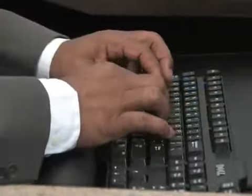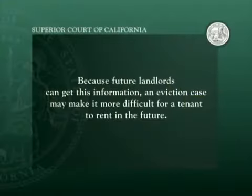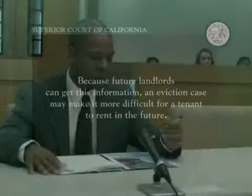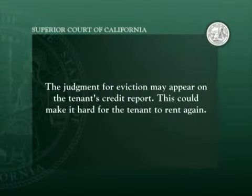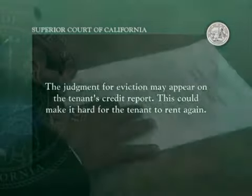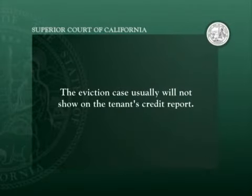An eviction case becomes public record 60 days after the case is filed. This means that someone could do a search of public records, find the eviction case, and see what happened on it. Because future landlords can get this information, an eviction case may make it more difficult for a tenant to rent in the future. If the landlord wins the eviction case, either because the tenant does not answer or because the tenant answers and loses, the judgment for eviction may appear on the tenant's credit report. If the tenant wins after a trial, or if both sides reach a solution by written agreement, the eviction case usually will not show on the tenant's credit report.